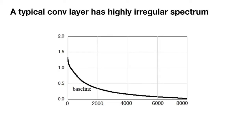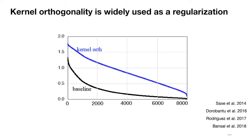Our hypothesis is that this is partially caused by the highly irregular spectrum of a typical convolutional layer. Kernel orthogonality was proposed and widely used as a regularization. However, it still doesn't provide uniform spectrum.